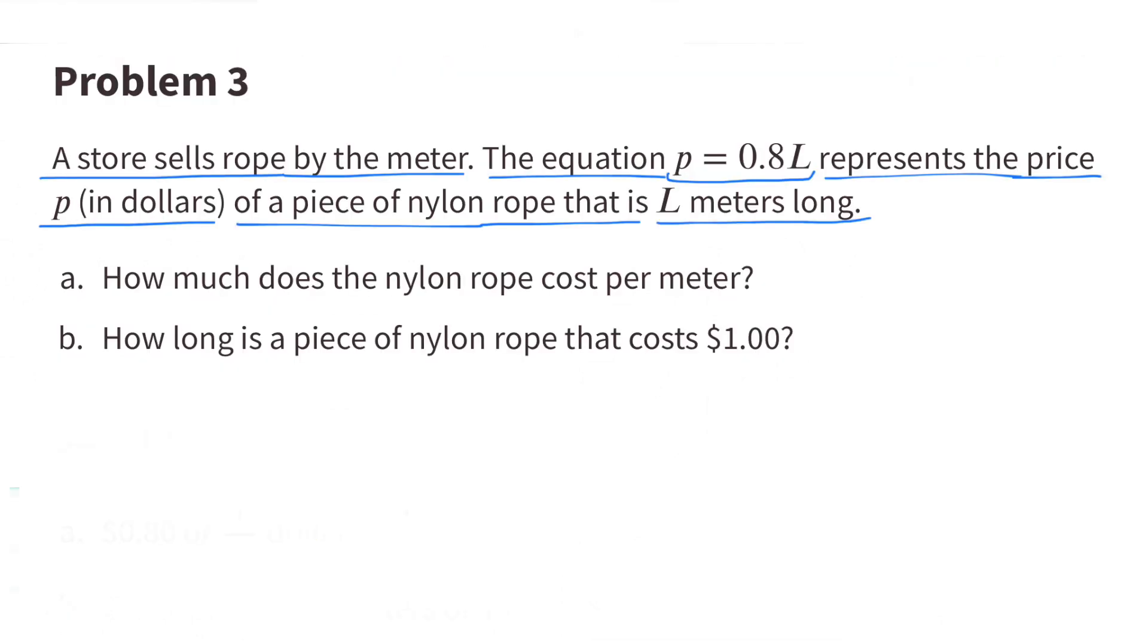Number 3. A store sells rope by the meter. The equation p equals 0.8L represents the price p in dollars of a piece of nylon rope that is L meters long. A. How much does the nylon rope cost per meter?